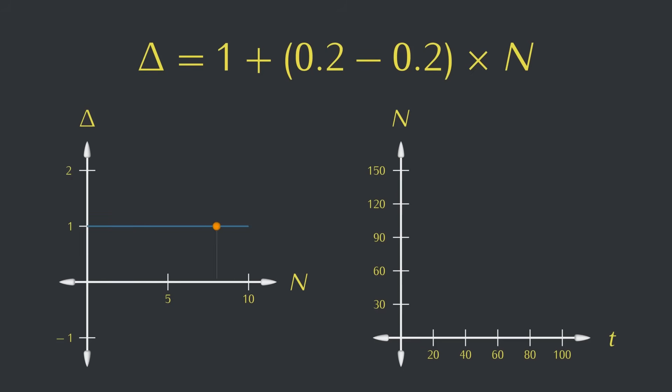No matter how many creatures there are, the death and replication chances offset each other, and we expect the population to constantly grow at the spontaneous birth rate, which in this case is at one creature per time step. So starting at five creatures again, the expected curve looks like this. Steady growth.